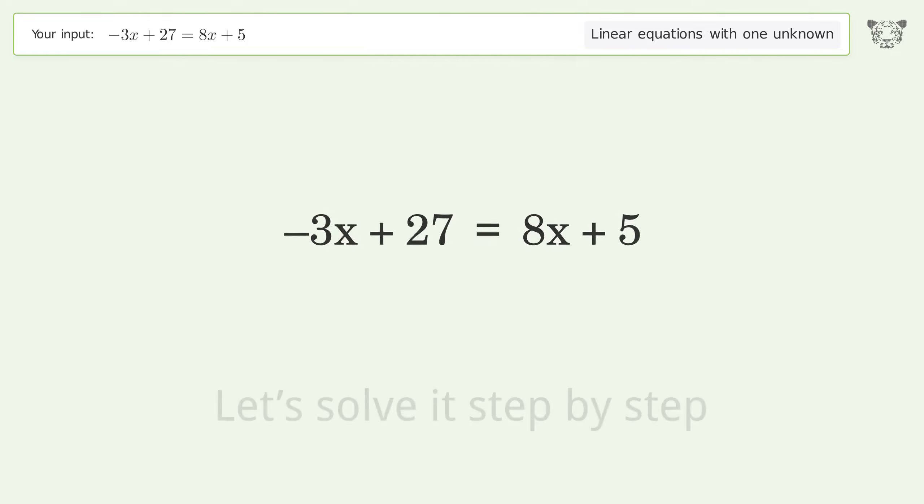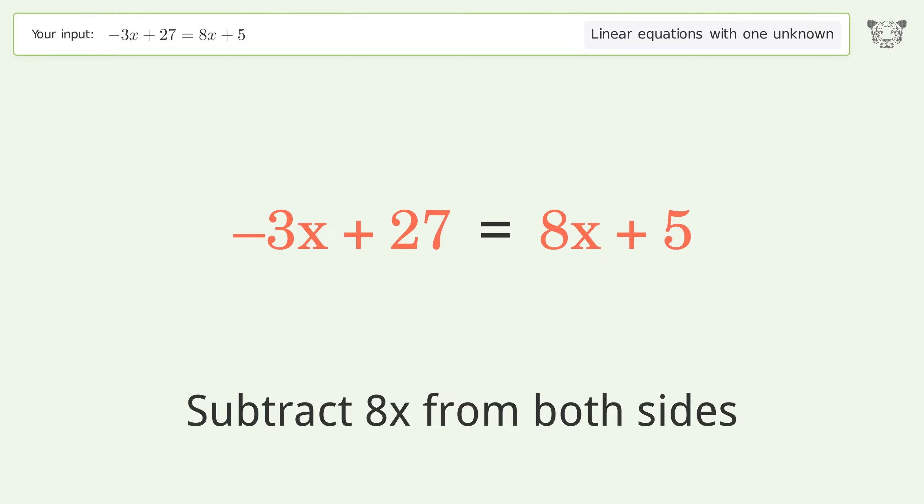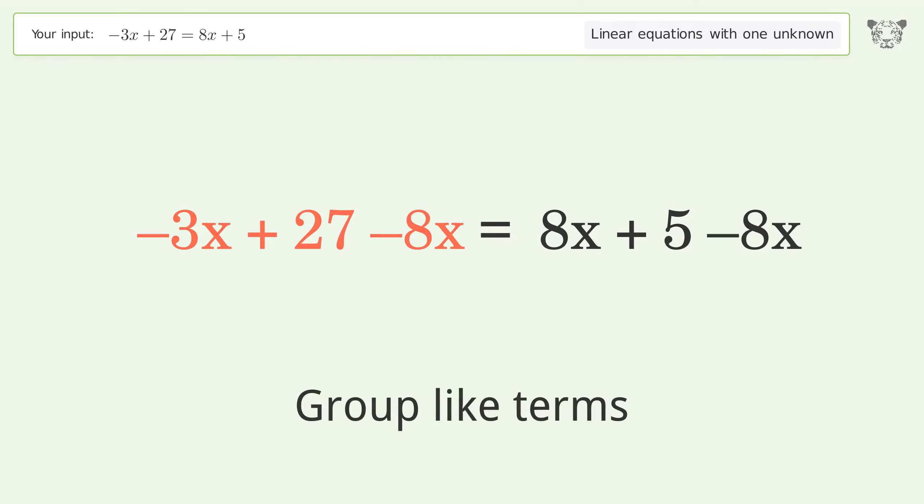Let's solve it step by step. Group all x terms on the left side of the equation. Subtract 8x from both sides. Group like terms.